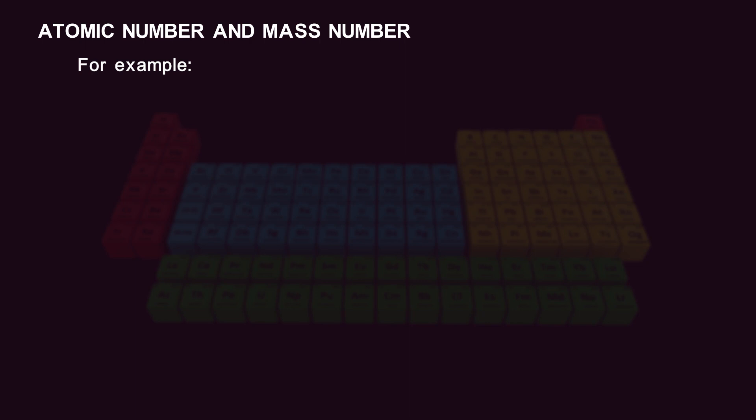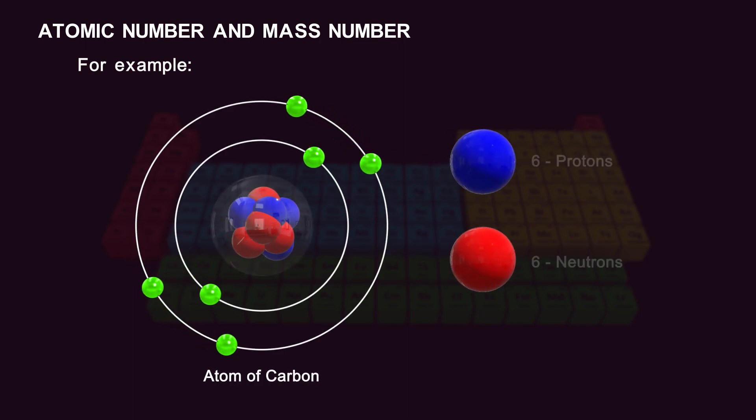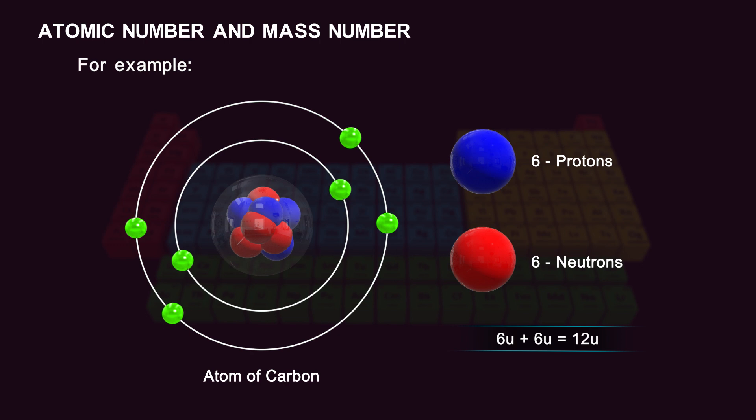For example, a carbon atom has six protons and six neutrons, and thus its mass number is 6u plus 6u equals 12u.